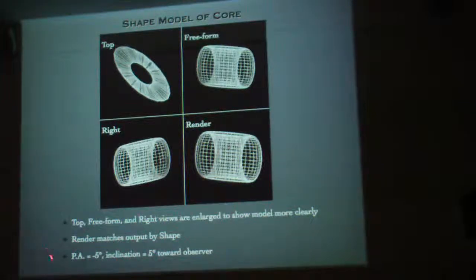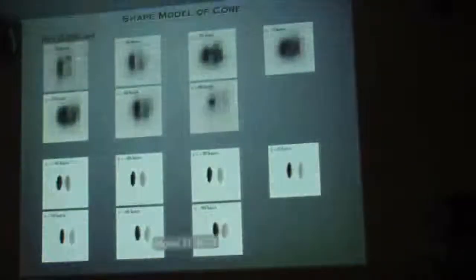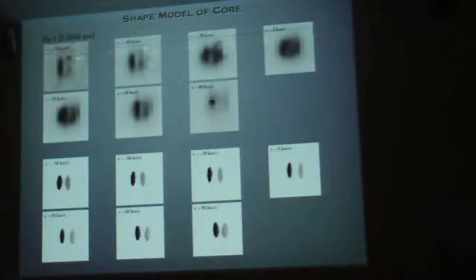And we have a position angle of minus 5 degrees, tilting at minus 5 degrees towards the observer. Here's our model. So this is comparing the channel maps in helium 1. The channel maps produced by our shape model. You can see they more or less correspond to our observations.